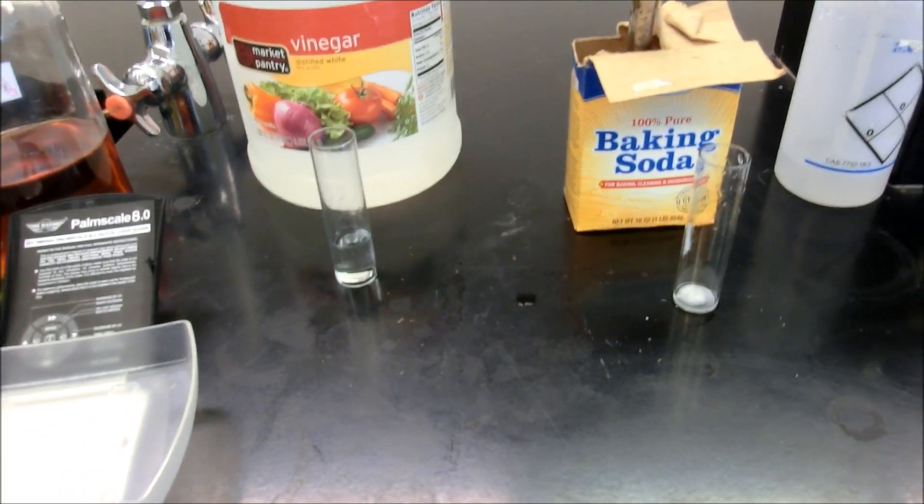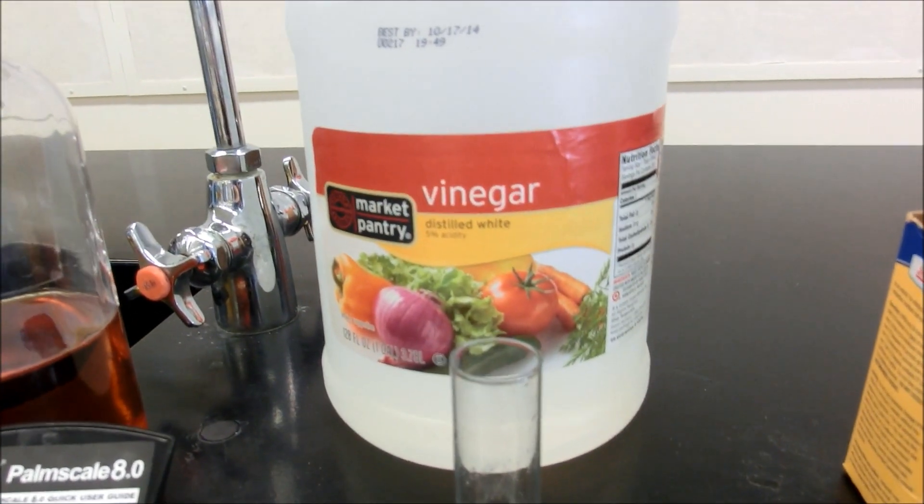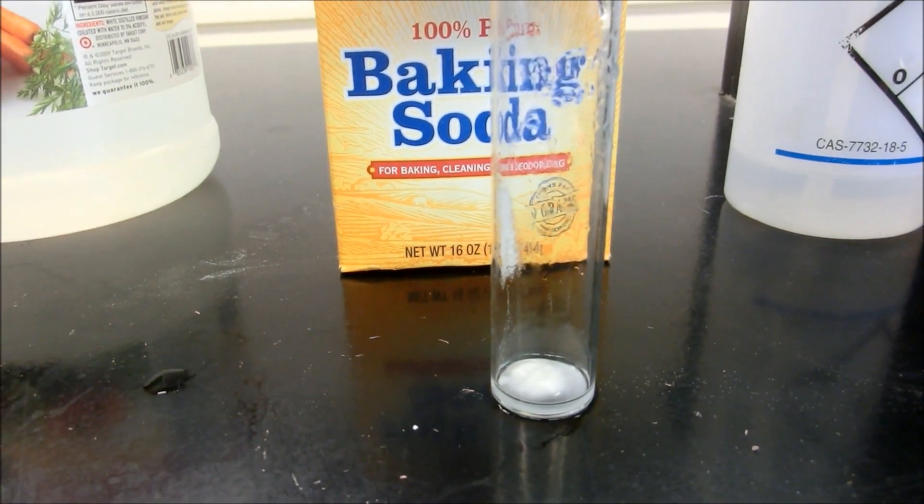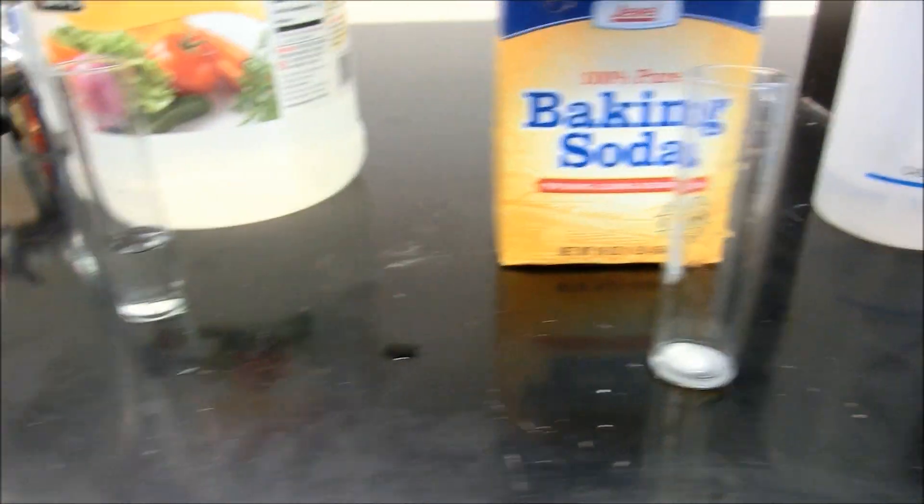So we've got baking soda and vinegar. There's the vinegar. There it's poured out. By the way, we call that hydrogen acetate as well. The sodium bicarbonate is also called baking soda, if you're wondering where those came from.